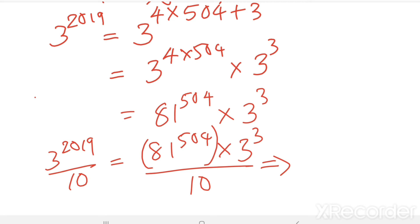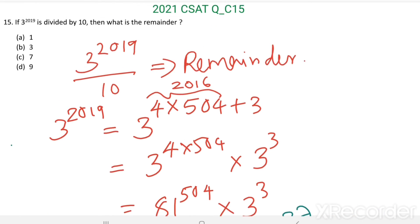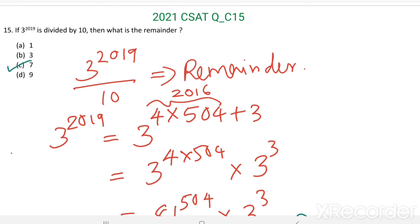81 divided by 10 gives remainder 1. So we have 1 power 504 into 3 cubed, which equals 27. Then 27 divided by 10 gives remainder 7. Therefore remainder equals 1 power 504 into 7, which equals 7. Option C, 7, is the right answer.